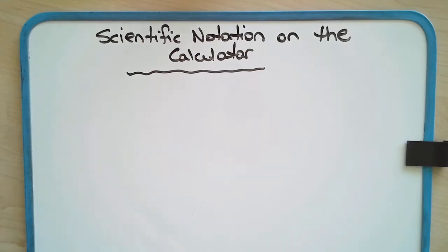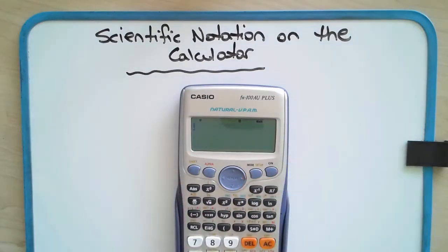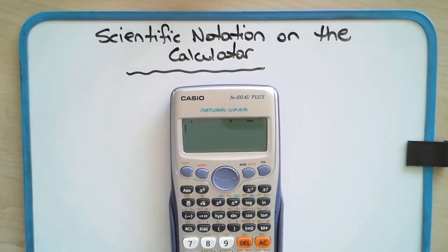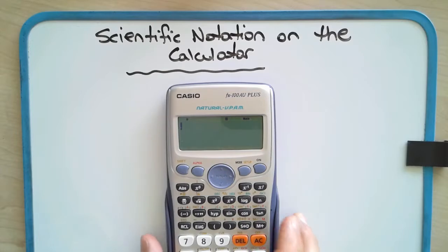The calculator I've got with me at the moment is the Casio FX100AU+, but it works equally well with the FX82AU+ or PLUS2. First thing, entering in scientific notation on a calculator.